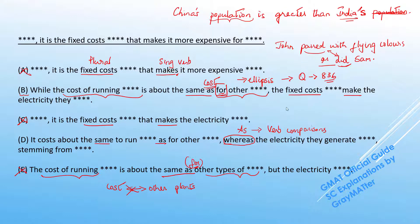And we can use whereas to say, John passed with flying colors whereas Sam failed poorly. This is the right usage of as and whereas to compare actions, wherein as will indicate a similarity and whereas will indicate a difference.